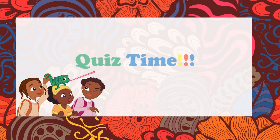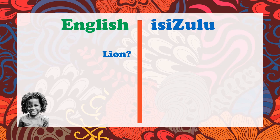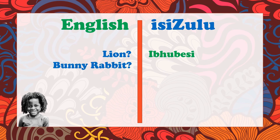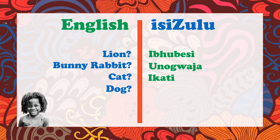Are you ready? What's a lion in isiZulu? Ipubesi — that's right. And what's a bunny rabbit in isiZulu? Unogwaja — it's Unogwaja. Well done. And what do you call a cat? A cat is Ikati. And a dog — what do you call a dog in isiZulu? Inja. That's right. And a pig? A pig is Ingulube. Well done, guys.